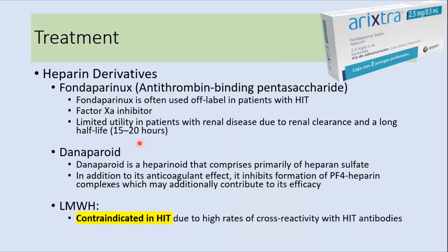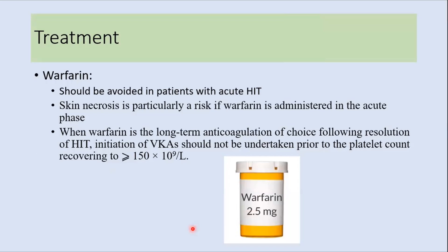Other options include fondaparinux, a factor Xa inhibitor used off-label in HIT, and danaparoid, a heparinoid comprising primarily heparin sulfate, which has efficacy because it not only has anticoagulant effects but also inhibits formation of the PF4-heparin complex. However, low molecular weight heparin (LMWH) is contraindicated in HIT due to high rates of cross-reactivity with HIT antibodies. Warfarin should also be avoided in acute HIT as it increases the risk of skin necrosis and thrombosis, though it can be used for long-term anticoagulation after HIT resolves.